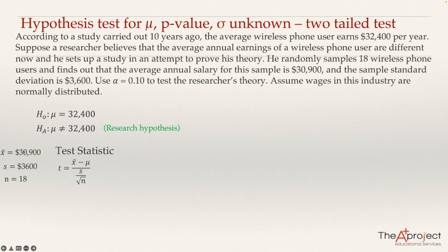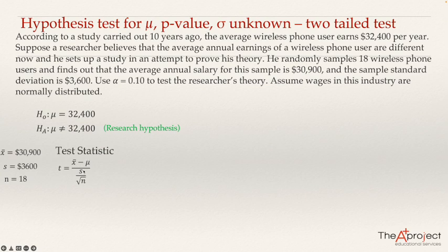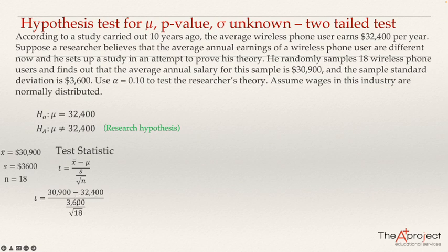Making the substitution: x-bar is 30,900. The population mean from the null hypothesis — which we assume to be true — is 32,400. The sample standard deviation is 3,600 and n equals 18. Computing: (30,900 − 32,400) divided by (3,600 over √18) equals negative 1.768. This is the t-test statistic value.